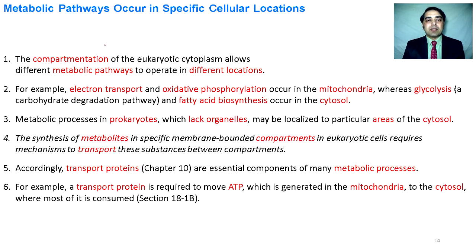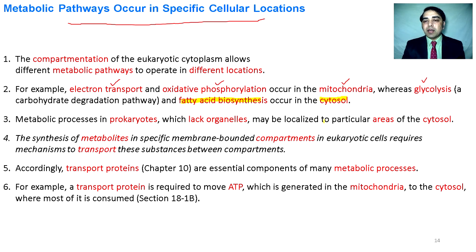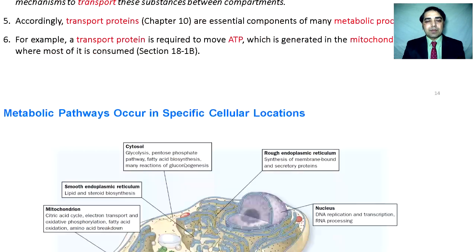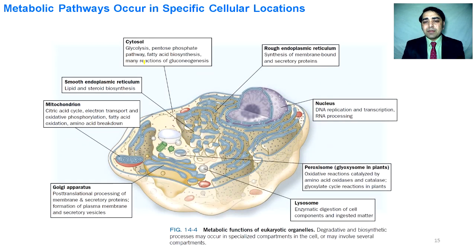Metabolic pathways occur in specific cellular locations. Metabolic reactions are perceived in a way that they occur in different compartments and organelles. For example, the electron transport chain and oxidative phosphorylation occur in the mitochondria, while glycolysis and fatty acid biosynthesis occur in the cytosol. The synthesis of metabolites occurs in different compartments, and after synthesis they are transported to other parts of the cell using transport proteins. For example, ATP synthesized in the mitochondria is transferred to other parts of the cell through transport proteins.